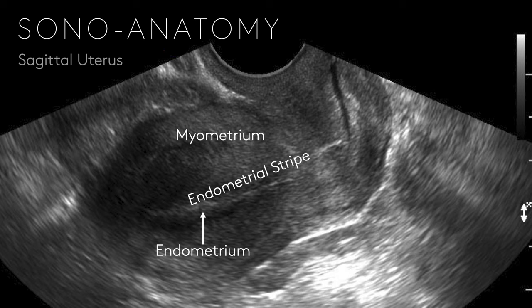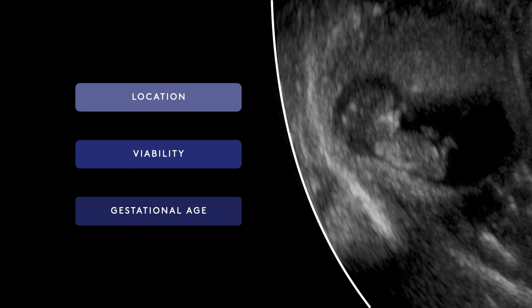Drilling down on uterine anatomy: there is an outer mantle of myometrium and then a hyperechoic line running down the middle — that's the endometrium, or endometrial stripe. When you put a baby in there you want to see it eccentrically located off of that endometrial stripe, not within it. Anything in the endometrial stripe is concerning for something in transit rather than implanted in the endomyometrial area.